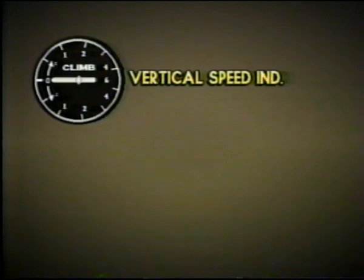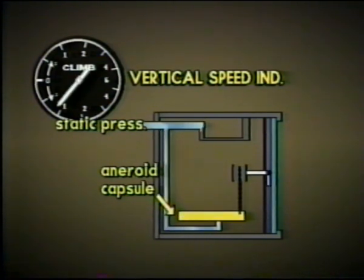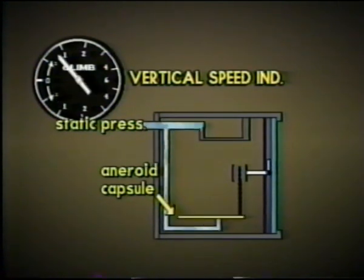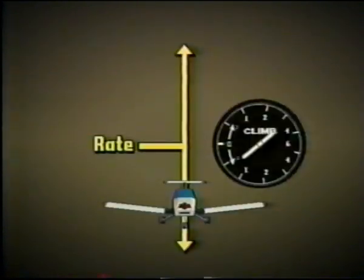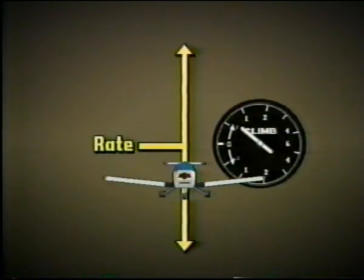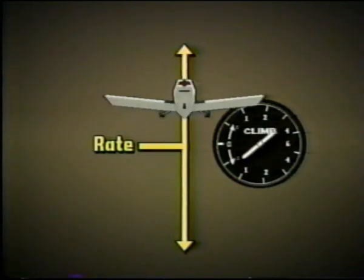The vertical speed indicator shows the rate of climb or descent. It uses an aneroid capsule connected to the static pressure line to measure change in barometric pressure. As the airplane descends, the pressure in the static line increases; the opposite is true for gain in altitude. During level flight, the pointer remains at zero. The instrument is calibrated in feet per minute. Keep in mind, the vertical speed indicator measures the rate of climb or descent, not the altitude of the plane.